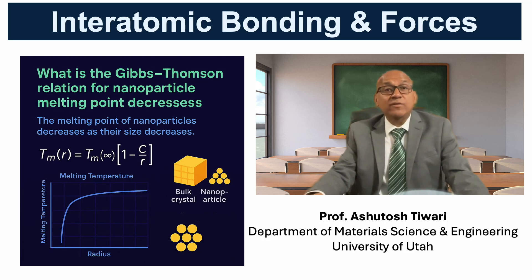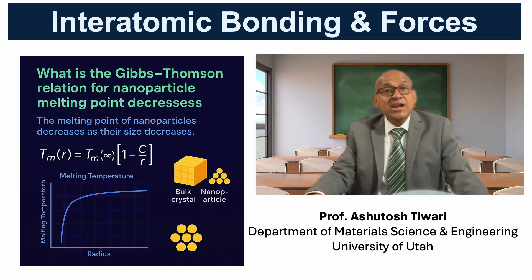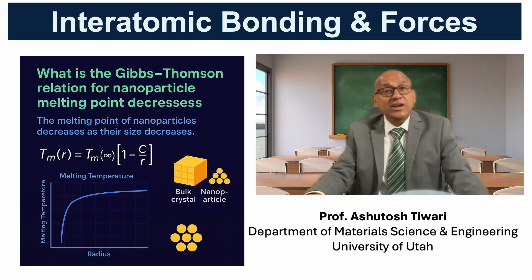The melting point of nanoparticles decreases as their size decreases. This effect is explained by the Gibbs-Thompson relation. According to this relation, Tm(R) equals Tm(∞) multiplied by (1 minus C over R), where Tm(R) is the melting temperature of a particle with radius R, Tm(∞) is the bulk melting temperature, and C is a material constant.